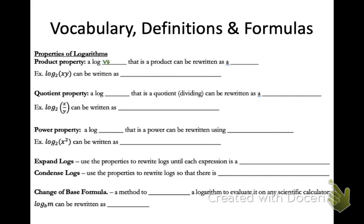A log value that is a product can be written as a sum. For example, log base 2 of x times y can be written as log base 2 of x plus log base 2 of y. Notice that the value of the log, which is x times y, is a product. So you can rewrite that as a sum, because sometimes we need to break logarithms apart like that.